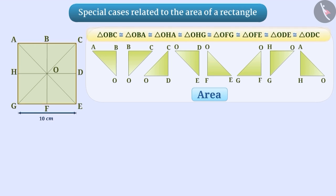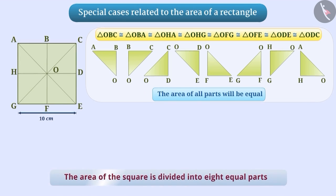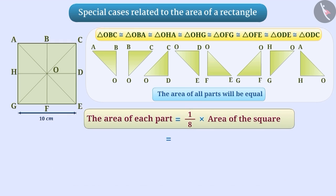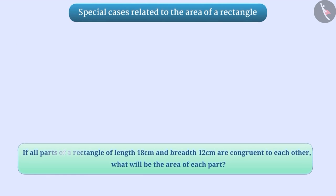Since all parts are congruent to each other, we can conclude that they are equal in area. Since the area of the square is divided into eight equal parts, the area of each part will be 1 by 8 into area of the square, which is equal to 1 by 8 into 10 cm into 10 cm, which is equal to 1 by 8 into 100 cm squared, which is equal to 12.5 square centimeters.